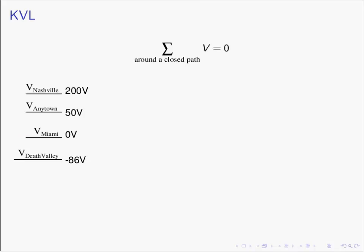Our charged particle is going to start at the energy level of Anytown. If the charged particle is then moved to the energy level at Death Valley, what is its increase in energy? Well, the increase in energy is negative 136 volts. Then that charged particle is raised in energy to this point — the energy level at Nashville. What is the increase in energy? Well, it's 286 volts.